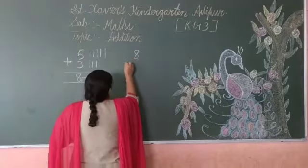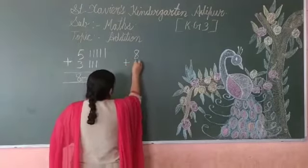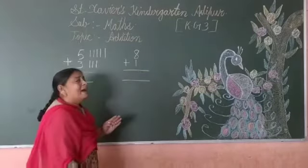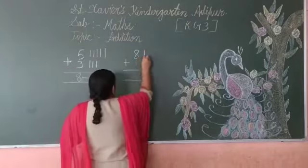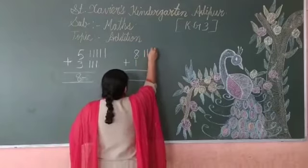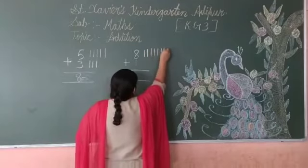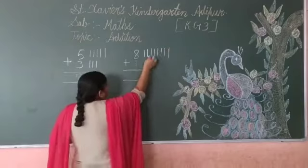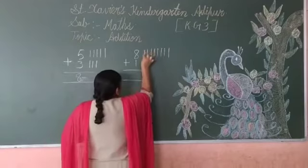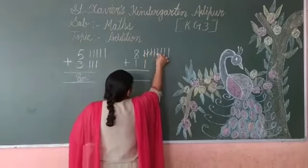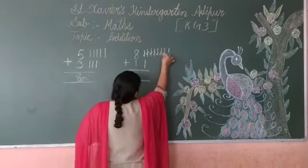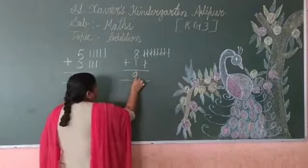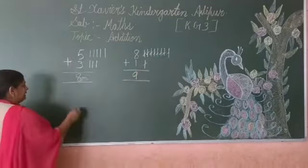Now 8 plus 1. Draw 8 lines: 1, 2, 3, 4, 5, 6, 7, 8. And 1 line. Now count all together: 1, 2, 3, 4, 5, 6, 7, 8, 9. So 8 plus 1 equals 9.